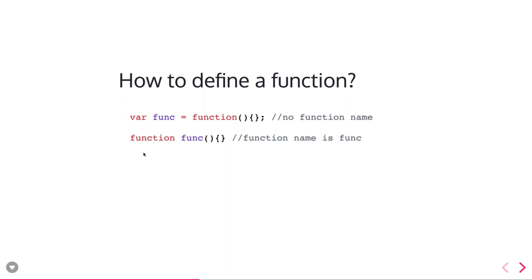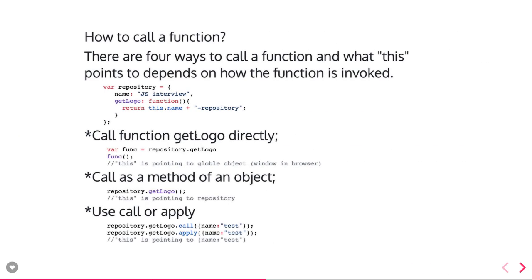How to define a function: there are different ways. Using an anonymous function, you can assign functions to another variable, or you can pass one function to another function — that is called a callback mechanism. When you are returning a function from a particular function, the definition is simple and you don't need a function name.